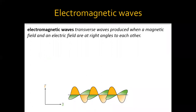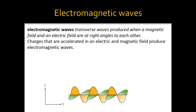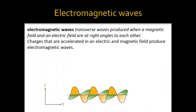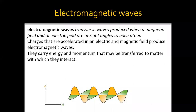An electromagnetic wave is produced when a magnetic field and an electric field are at right angles to each other. If the magnetic field and electric field are not at right angles, we are not going to observe any electromagnetic waves. Charges are responsible for these kinds of waves — they accelerate and produce electromagnetic waves.